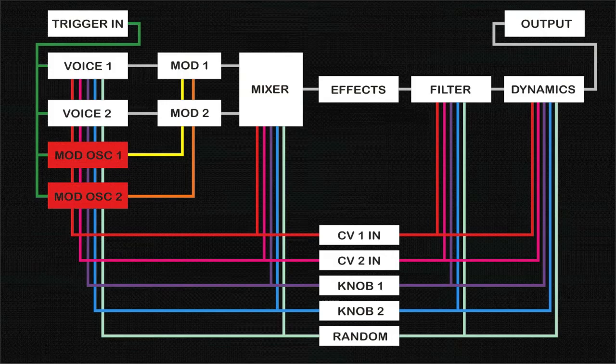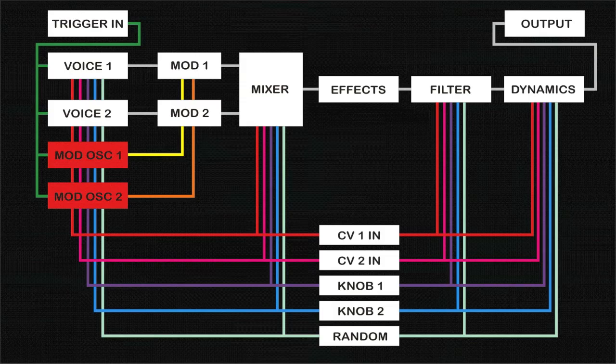Each modulation oscillator can produce traditional waveforms like sine, triangle, sawtooth, square wave, and variations of these, as well as a number of unique envelope waveforms suited more for amplitude modulation.